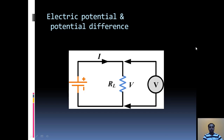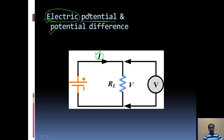Hello dear students. In this video we will see electric potential and potential difference. This word electric is related to electricity — the current that is flowing inside a circuit. Potential is nothing but energy. So electric potential means the amount of potential energy or electric energy that is associated with a circuit — that is called electric potential.